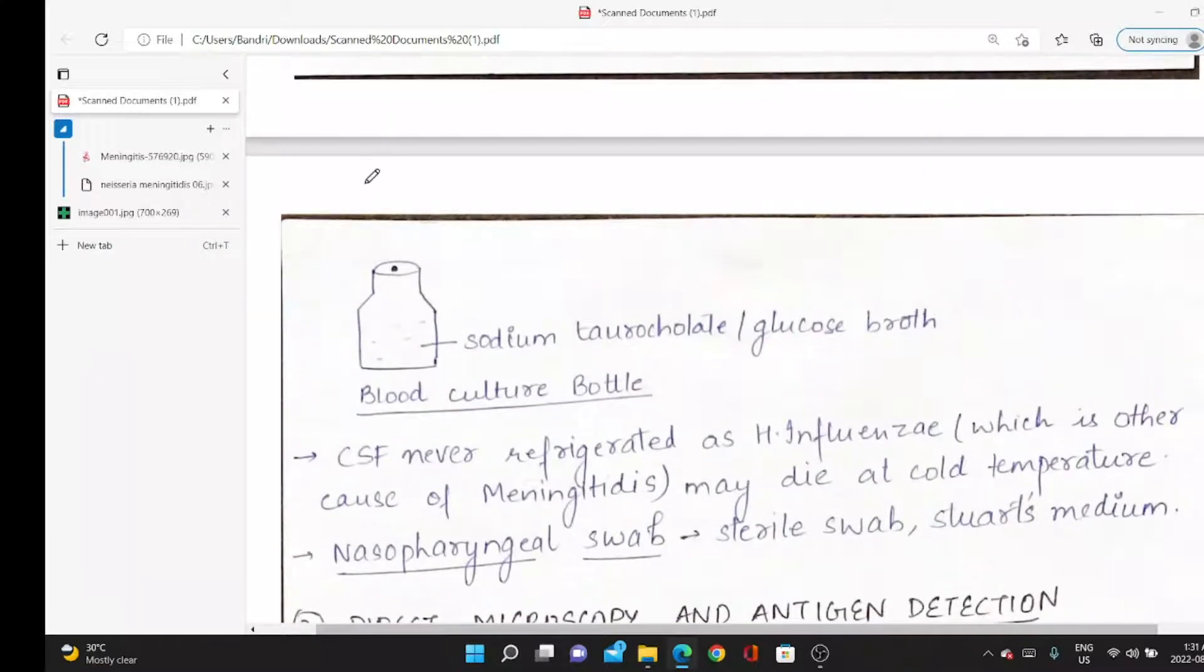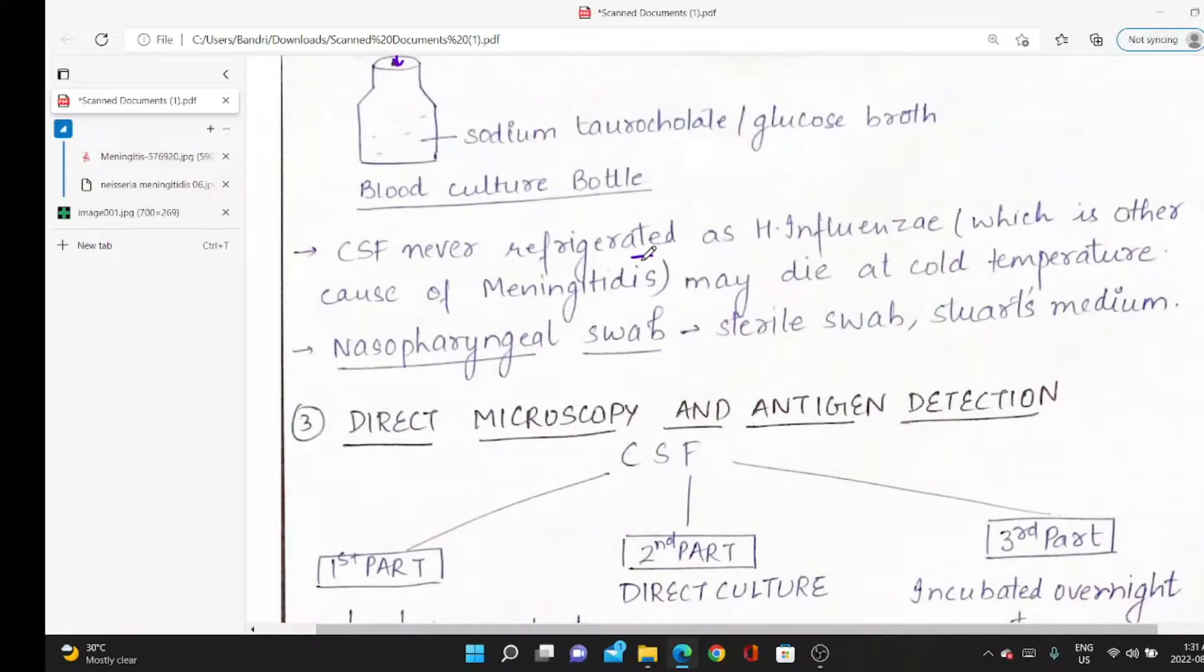Blood is transported in blood culture bottles which have sodium thioglycolate or glucose broth. We take the sample by injection, make a small hole, and transfer the blood directly into the bottle. This is how blood is transported. Never refrigerate CSF—cerebrospinal fluid sample.